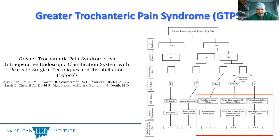Broadly, it can be defined into greater trochanteric bursitis, which in isolated form is fairly rare. You can have gluteal tendinopathy, which is tendinosis of the gluteus minimus or primarily the gluteus medius tendon. And then there are different stages of tearing of the abductor musculature, from partial low-grade tears where the medius still has a fairly strong attachment to the greater troch, to higher-grade full thickness and then full thickness tears with retraction.